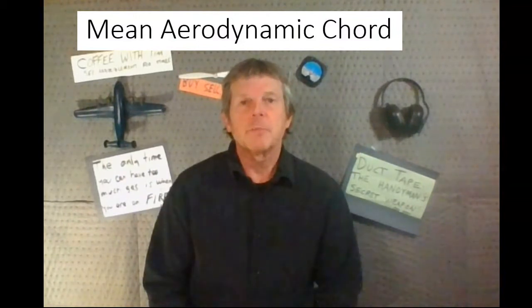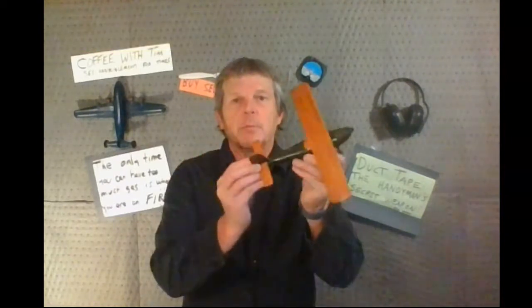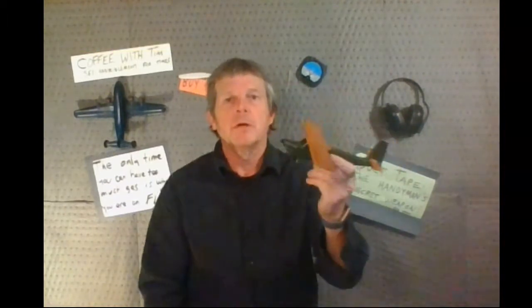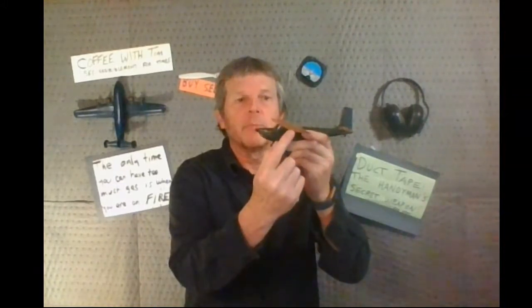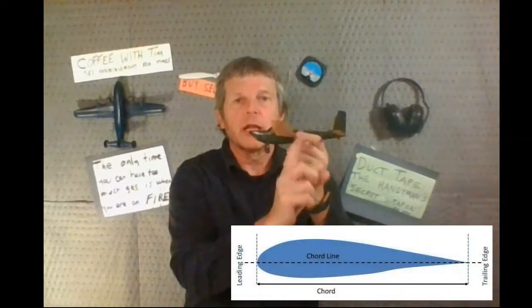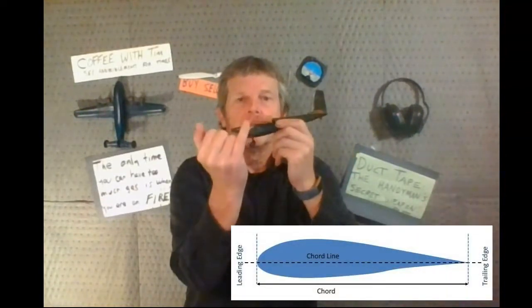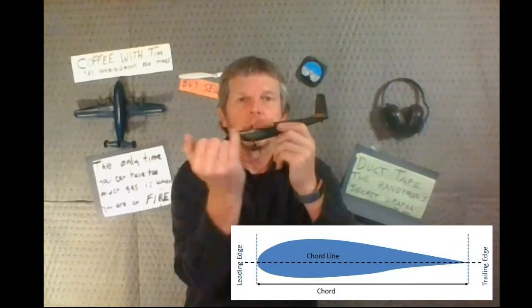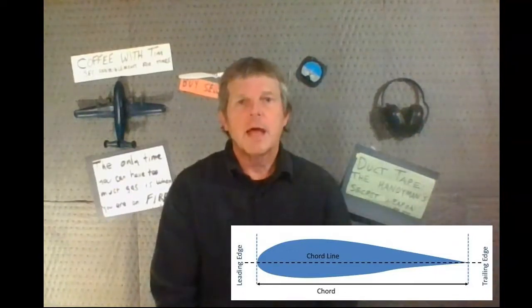First off, let's talk about what the chord is. The chord is a line. Here I have an airplane — a nice wood airplane. The chord is the line from the leading edge — this is the front — to the trailing edge of the wing. It is the line that passes from the leading edge to the trailing edge, right through the center of the wing. That is the chord.